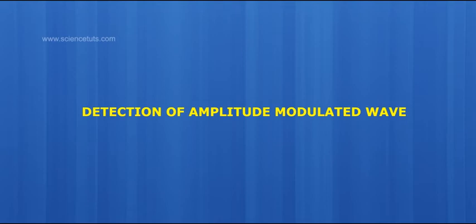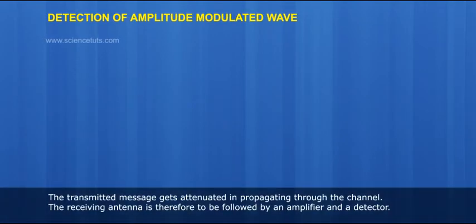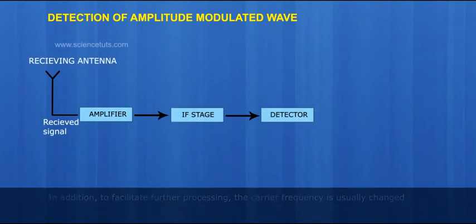Detection of Amplitude Modulated Wave. The transmitted message gets attenuated in propagating through the channel. The receiving antenna is therefore to be followed by an amplifier and a detector.